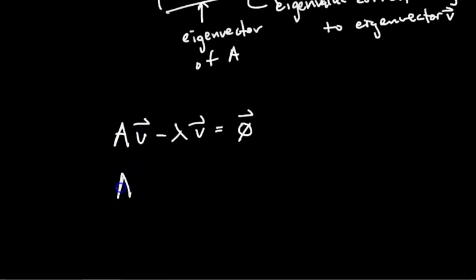So then what if I factor out V? Can I do that? A minus lambda. If you remember from the matrix algebra video, you have to factor this out on the right side because the order in which you multiply matrices matters. So I get this form.